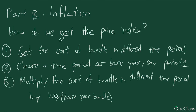When dealing with questions related to CPI and the GDP deflator, the most common first step is to get the price index. The general approach is: step one, get the cost of a bundle in different time periods; step two, choose a base year — for example, period one; step three, multiply the cost of the bundle in each period by 100 over the base year bundle cost. Key notes: for CPI, always use the base year quantity when calculating bundle costs. For the GDP deflator, always use the current year quantity as the basis of calculation.